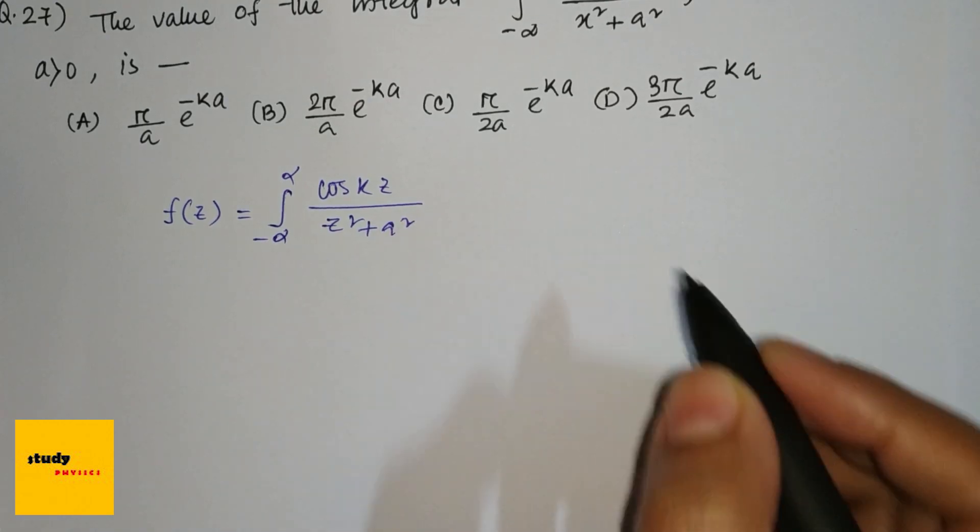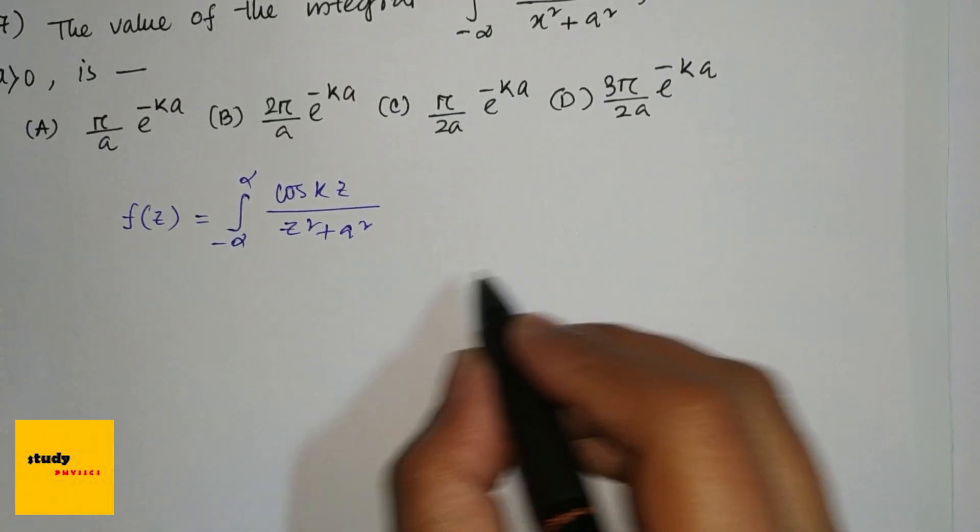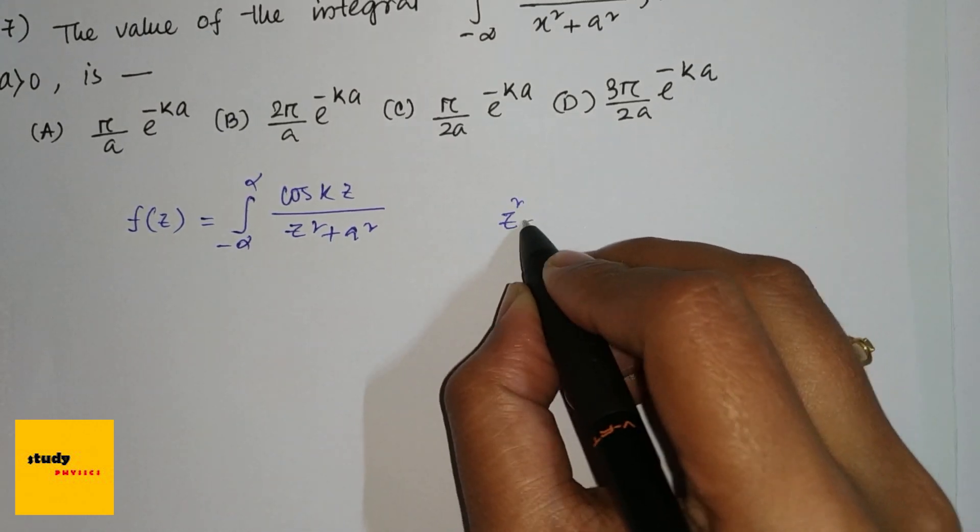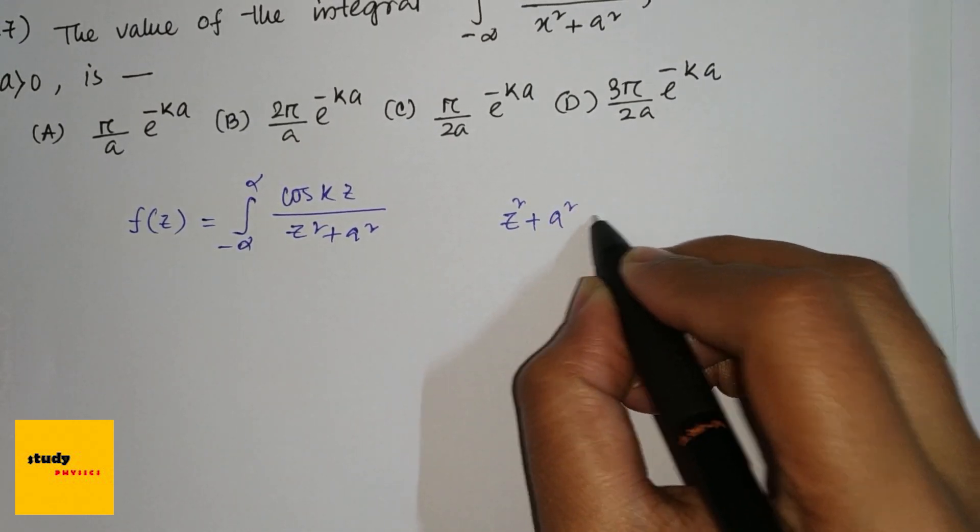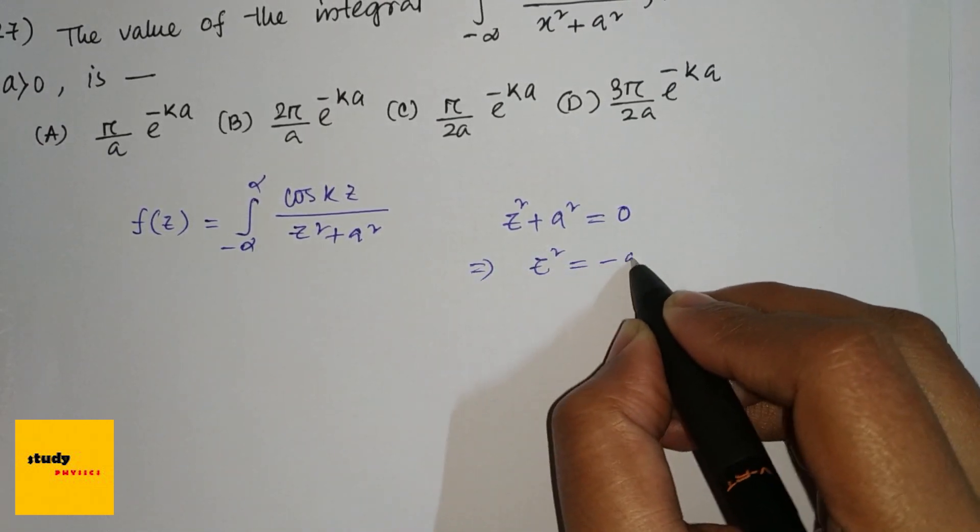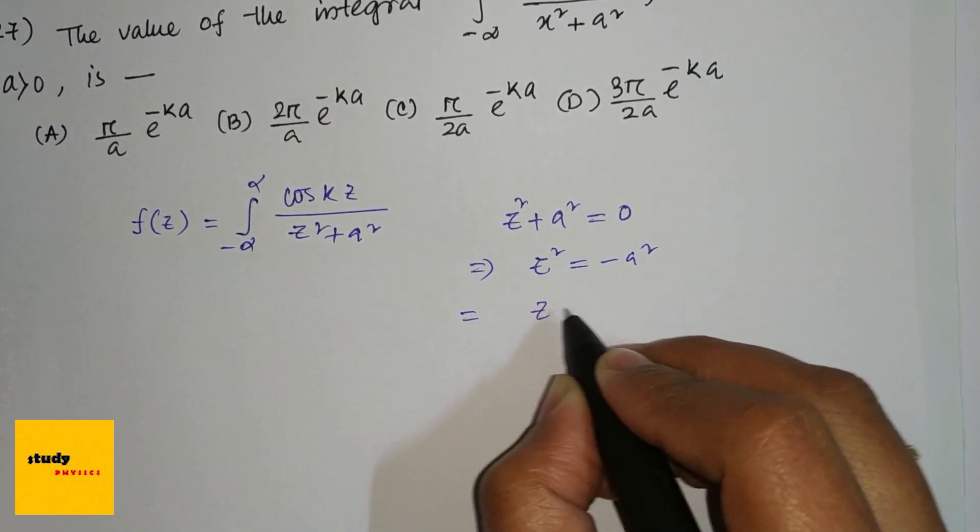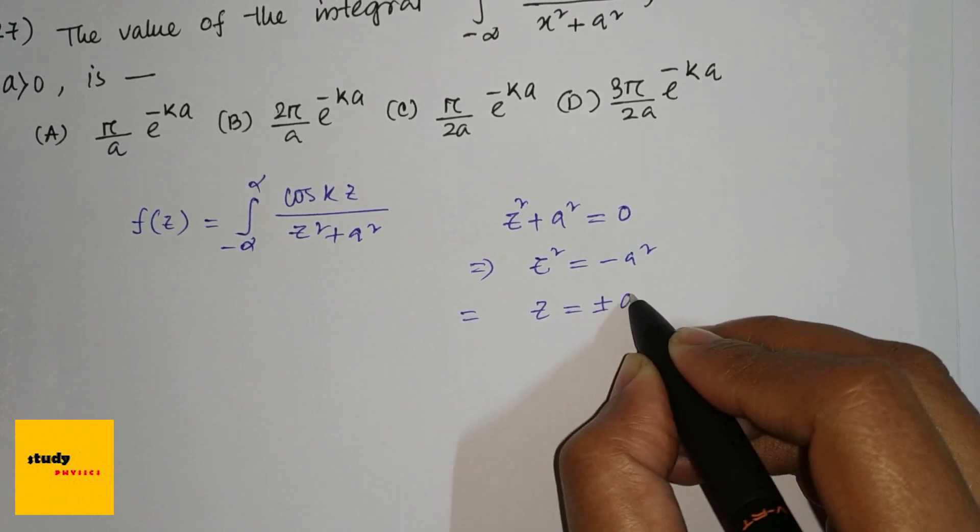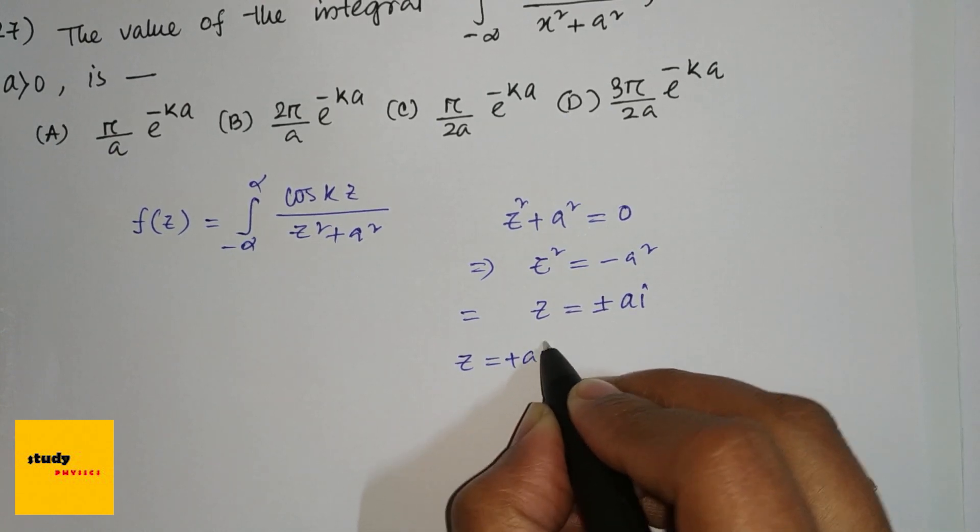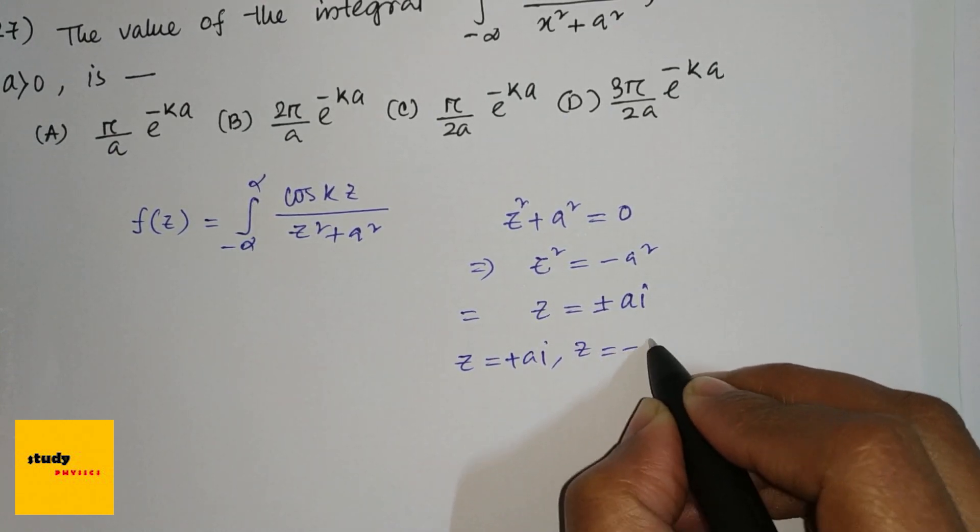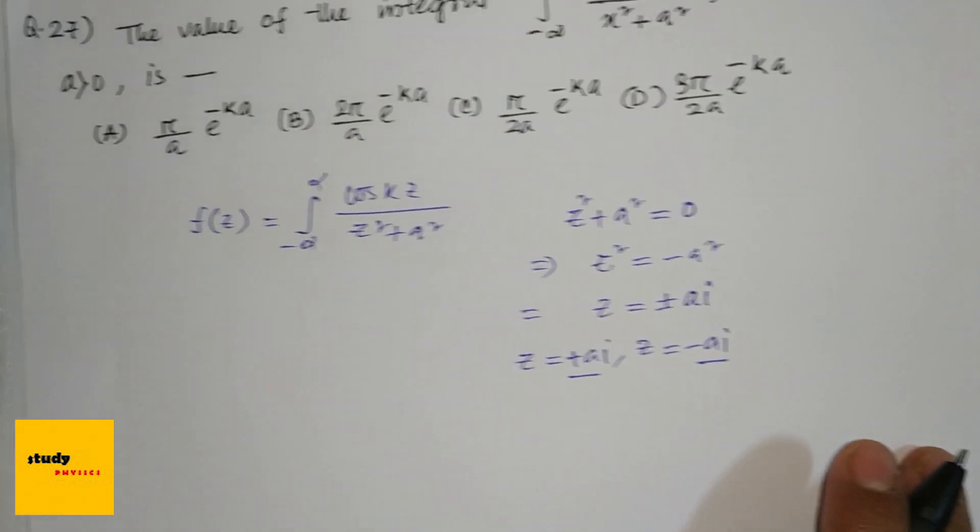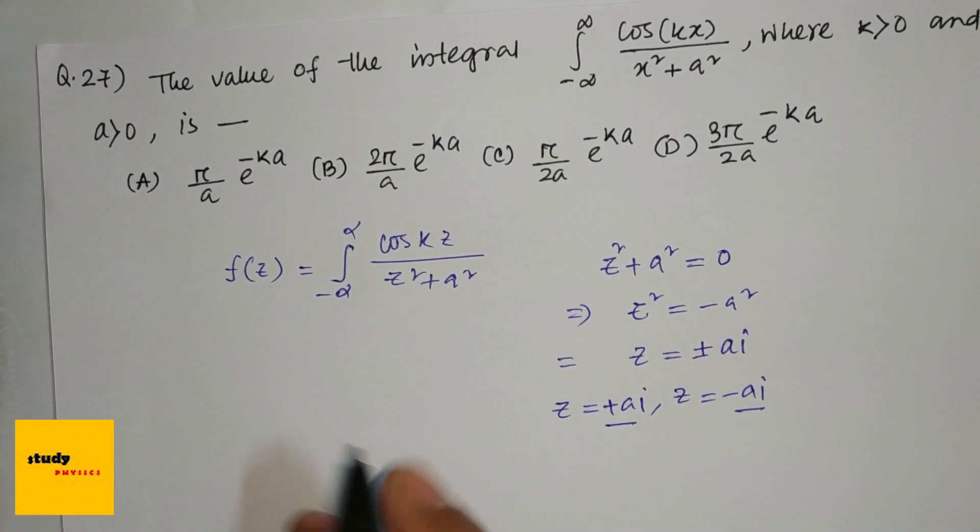To find the poles, we set the denominator equal to zero: z² + a² = 0, so z² = -a², and z = ±ai. Therefore, z = +ai and z = -ai are the two poles.